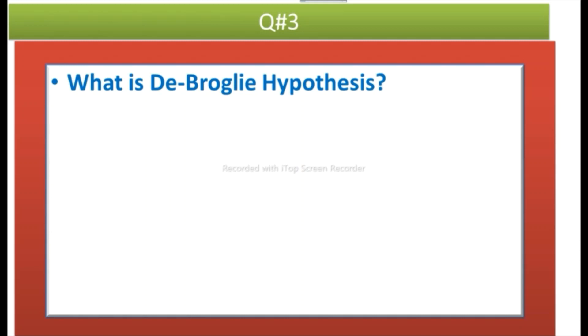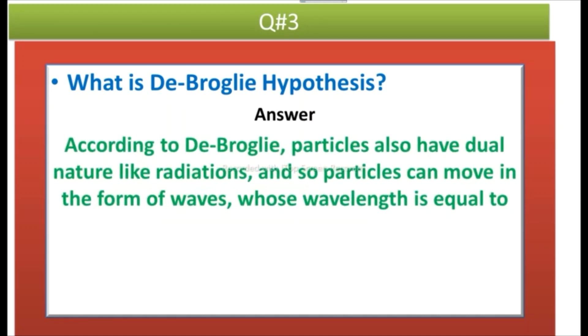Question number four: What is de Broglie hypothesis? Answer: According to de Broglie hypothesis, particles also have dual nature like radiations, and so particles can move in the form of waves whose wavelength is equal to lambda equals h over p, or lambda equals h over mv.